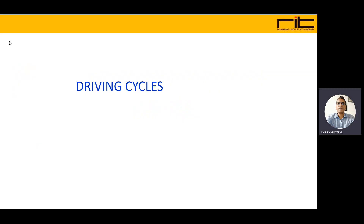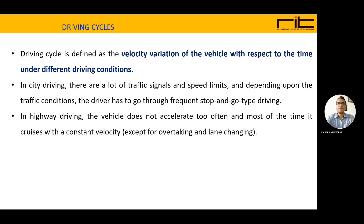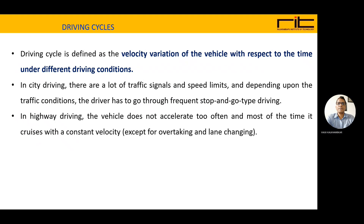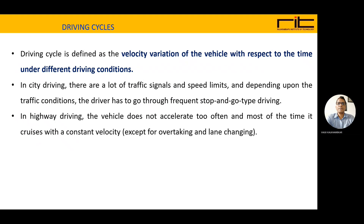Driving cycles. A driving cycle is defined as the velocity variation of the vehicle with respect to time under different driving conditions. In city driving, there are a lot of traffic signals and speed limits. Depending upon the traffic conditions, the driver has to go through frequent stop-and-go type of driving. This is called a frequent stop-and-go type of driving cycle.